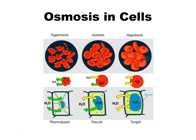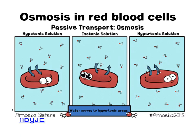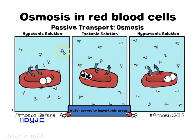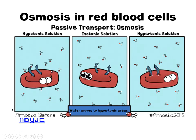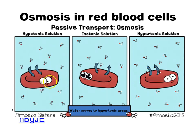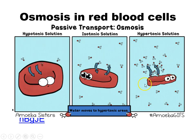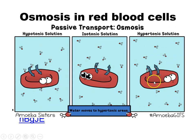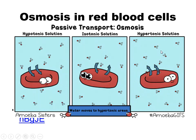You can look at animal cells and plant cells. Using red blood cells as our example for animal cells — in a hypotonic environment, you're going to have all of this water moving in and they're going to start swelling. Isotonic is where it's equal. In a hypertonic environment, there's more stuff outside, so the water is going to move out to try to balance it out and the cells are going to shrink.